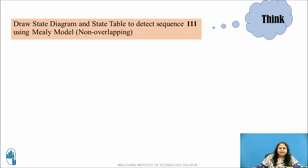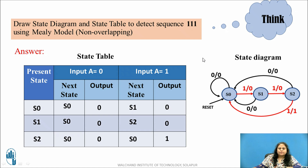Now pause this video and try to draw the state diagram and the state table to detect the sequence 1-1-1 using the Mealy model for the non-overlapping type. The answer is as shown. This is the state diagram and the state table for the sequence 1-1-1 using the Mealy model. Hence we discussed how to draw the state diagram and state table for a sequence detector using Mealy model for a non-overlapping type.